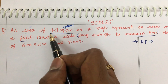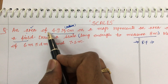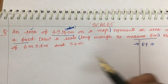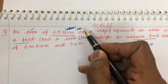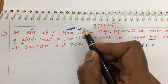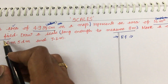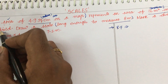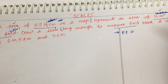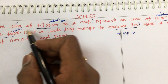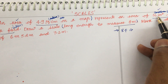The question is: an area of 49 square centimeters on a map represents an area of 16 square meters on a field. So we are going to represent 49 square centimeters on a map of this 16 square meters actual area.